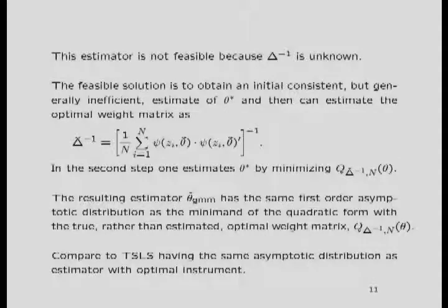This is analogous to two-stage least squares, where you get the same asymptotic distribution as if you had the optimal linear combination of instruments. At the same time, it's clear that in finite samples this may well be an issue. Much the same way there are issues with two-stage least squares if you have a high degree of over-identification, this first-order approximation may not work very well with a large degree of over-identification.